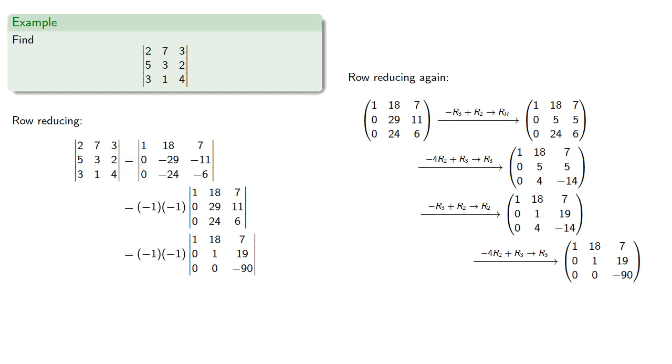This gives us a triangular matrix, and we can find the determinant by multiplying the entries along the main diagonal.